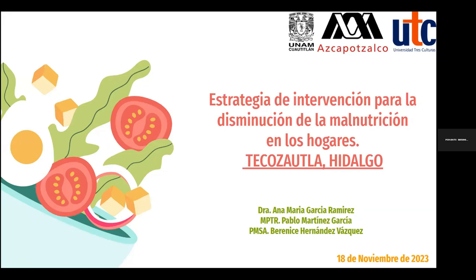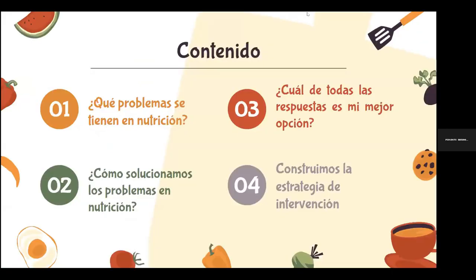Son comunidades atendidas por las Naciones Unidas para la disminución de los efectos de la carencia por acceso a la alimentación. El día de hoy vamos a hablar de cuáles son estos problemas, qué problemas originan la malnutrición en las personas, tanto en los niños como en todos los miembros que conforman un hogar. Vamos a hablar de cómo solucionamos estos problemas de la malnutrición, cuáles son las respuestas y cuál es la mejor opción.